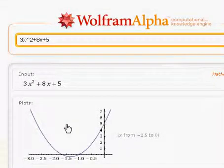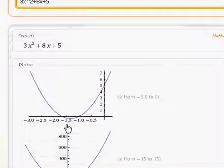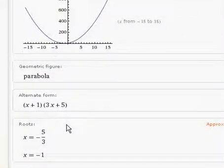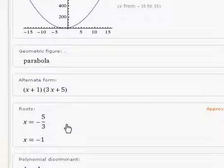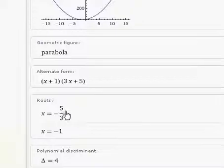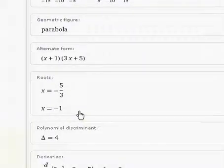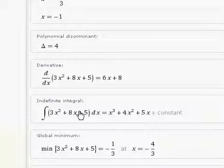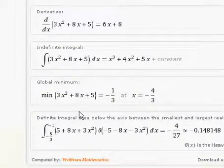Alright, it creates two parabolas. There they are. And there is the answer, x plus 1 times 3x plus 5. There are the roots. We're going to be getting into that soon. The polynomial discriminant, the derivative, the indefinite integral, and the global minimum, etc.